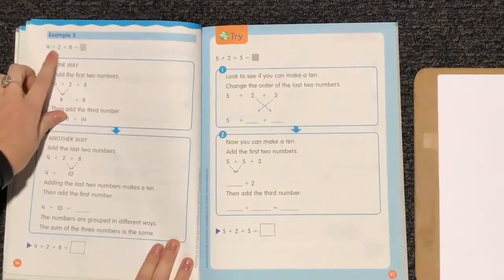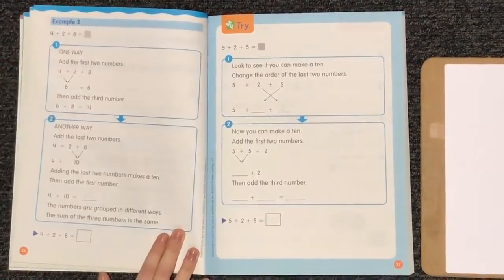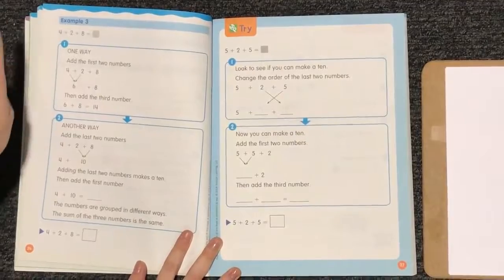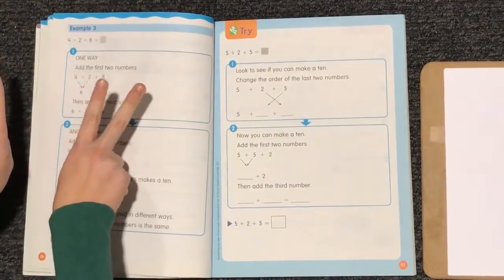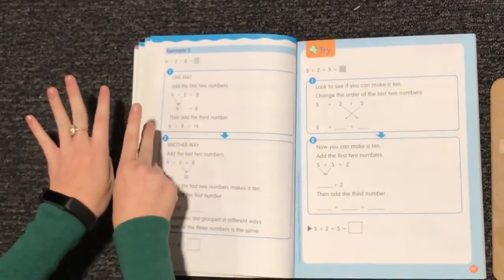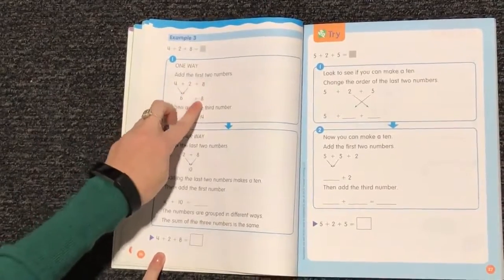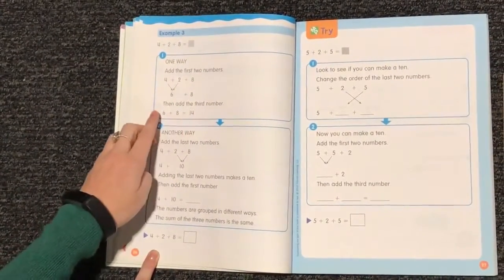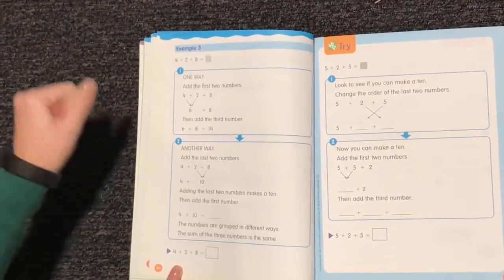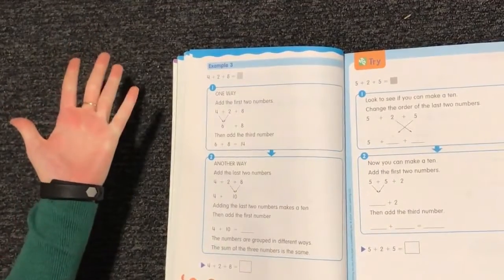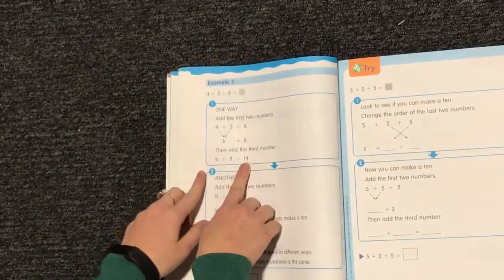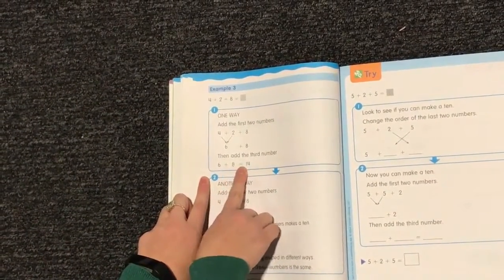So we have 4 plus 2 plus 8 equals what? So one way is to add the first 2 numbers like we did earlier. So I have 4 and I have 2. I want to put them together. I now have 1, 2, 3, 4, 5, 6. So 6 plus my 8 is going to be added together. So let's count on. I have 6. I want to count 8 more. So 6, 7, 8, 9, 10, 11, 12, 13, 14. I added 8 more to get 14. 6 plus 8 equals 14.